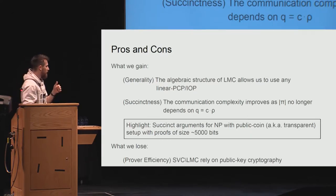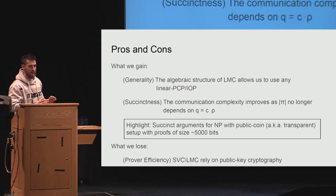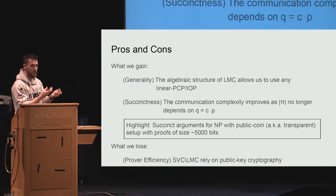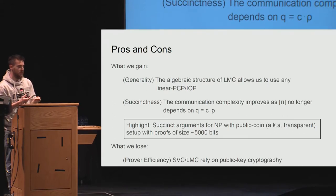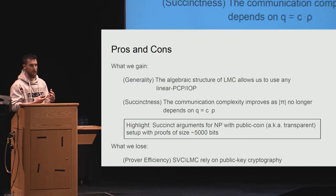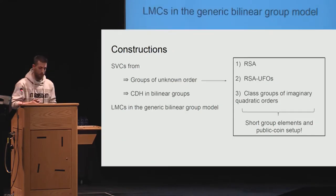These numbers are achieved by optimizing for proof size, so this is not a practical protocol—it's a feasibility result showing how much information is needed. What do we lose? Unfortunately, sub-vector commitment and linear map commitment use public key operations. It's unclear whether this is inherent, but the prover efficiency is obviously affected because instead of computing symmetric operations, you rely on public key cryptography.